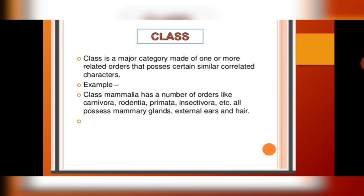Various related orders come together to form a class. It is a major category made up of one or more related orders that possess certain similar correlated characters. For example, class Mammalia has a number of orders: Carnivora, Rodentia, Primata, Insectivora, etc., depending upon which animals possess mammary glands, external ears, hair on the body, etc.